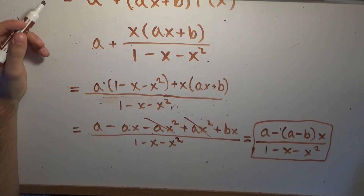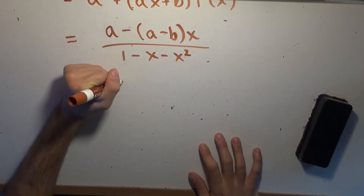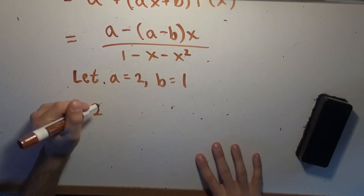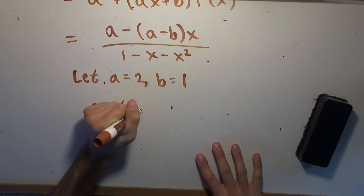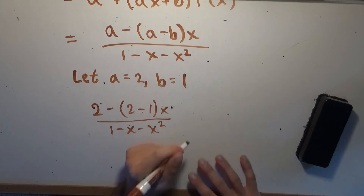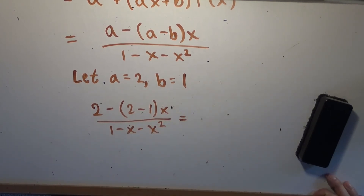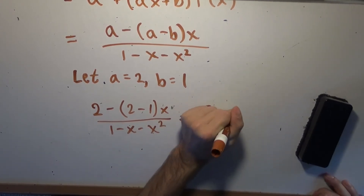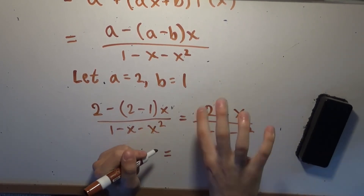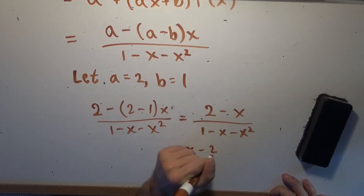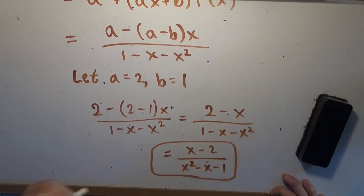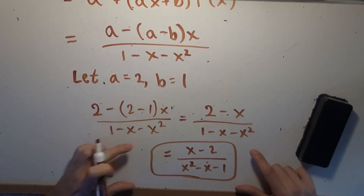Let's look at what happens when we pick A and B to be the Lucas number seed values. Let A equal 2 and B equal 1. We end up with 2 minus (2 minus 1) times x, divided by 1 minus x minus x squared — which gives us 2 minus x over 1 minus x minus x squared. Or equivalently, x minus 2 over x squared minus x minus 1. That's our capital L of x, the generating function for the Lucas numbers.